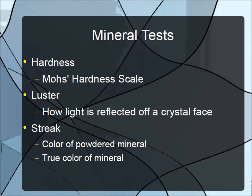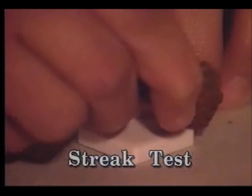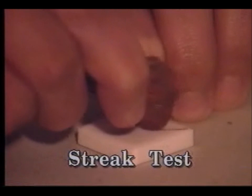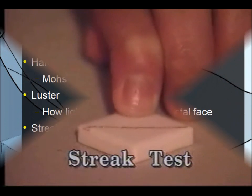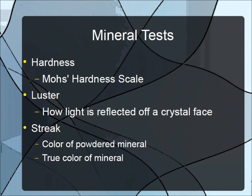Because color can be unreliable, scientists use a streak test to determine the true color of a mineral. Minerals can react with the atmosphere and appear very different from their true color. The streak is the color of the powdered mineral, usually found by rubbing a mineral sample against a piece of unglazed porcelain. Minerals harder than the streak plate — which has a hardness of 7 — will not produce a streak.